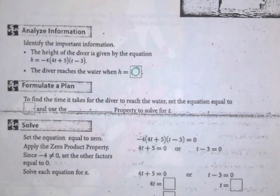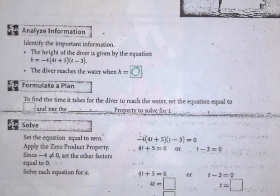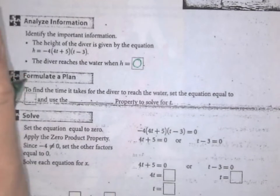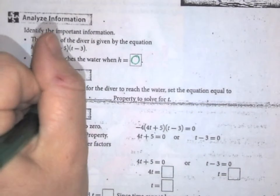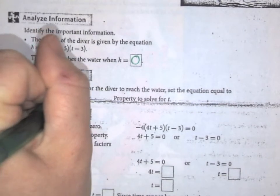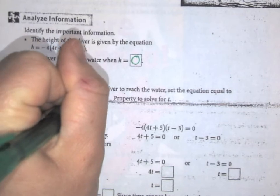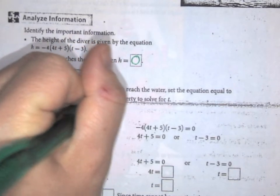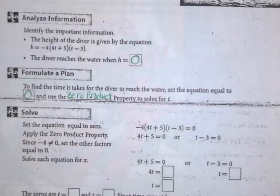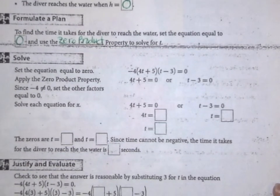In order to find the time it takes for the diver to reach the water, we need to set it equal to zero and use the zero product property, just like we were practicing in the previous video. If you missed it, go back and look at the zero product property video. It will explain all the properties we're about to use. When using the zero product property, you set each one of your factors equal to zero.